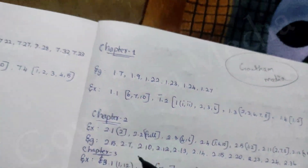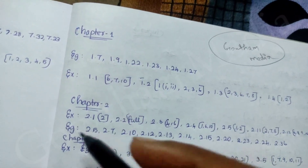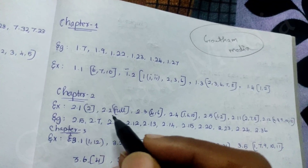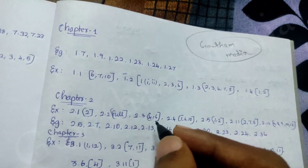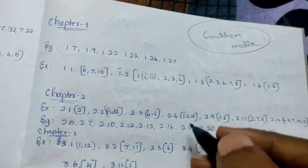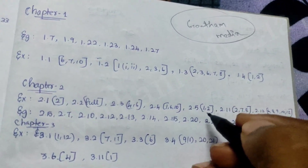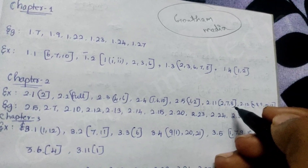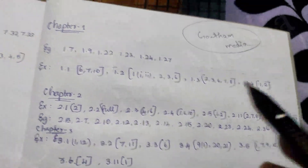That is the second chapter. Example 2.1 — 2nd sum. 2.2 — 4th sum, 6th sum. 2.4 — 1st sum, 6th sum, 8th sum. 2.5 — 1st sum and 2nd sum. 2.11 — 2nd sum, 7th sum and 8th sum. 2.12 — 6th, 8th, 9th, 10th, 12th.